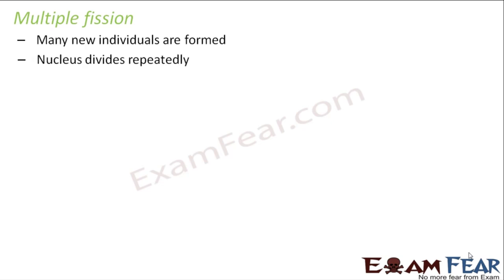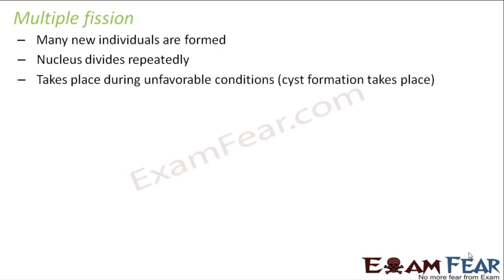Now let us look at multiple fission. The concept remains the same, except that in this case many new individuals are produced. The nucleus divides repeatedly — not just once. When the nucleus divides once, two nuclei are formed; when it keeps dividing again and again, many nuclei are formed. Multiple fission takes place under unfavorable conditions, which is an important difference from binary fission, which happens under favorable conditions.